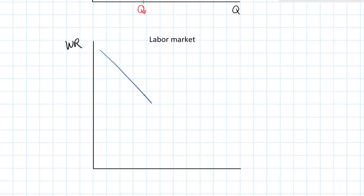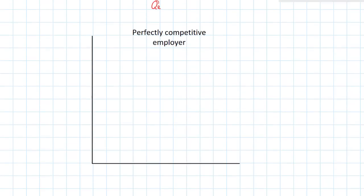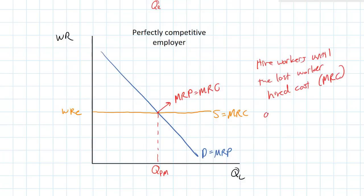Time to move on to labor markets — this is where firms demand labor. Demand for labor is downward sloping, representing the marginal revenue product: the marginal product of labor multiplied by the price of the good being sold. Supply of labor is upward sloping because at higher wages, households are willing to supply more labor. The equilibrium price in the market is the equilibrium wage rate. A perfectly competitive employer is a wage taker — a firm so small it doesn't have to raise wages to attract more workers. Supply equals marginal resource cost, and the profit-maximizing level of employment is where MRP equals MRC.